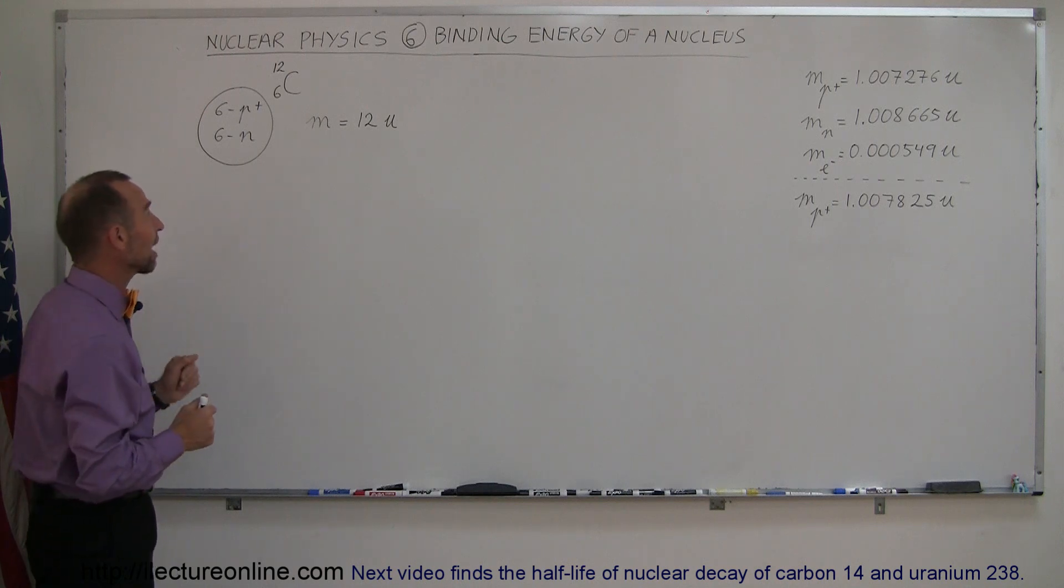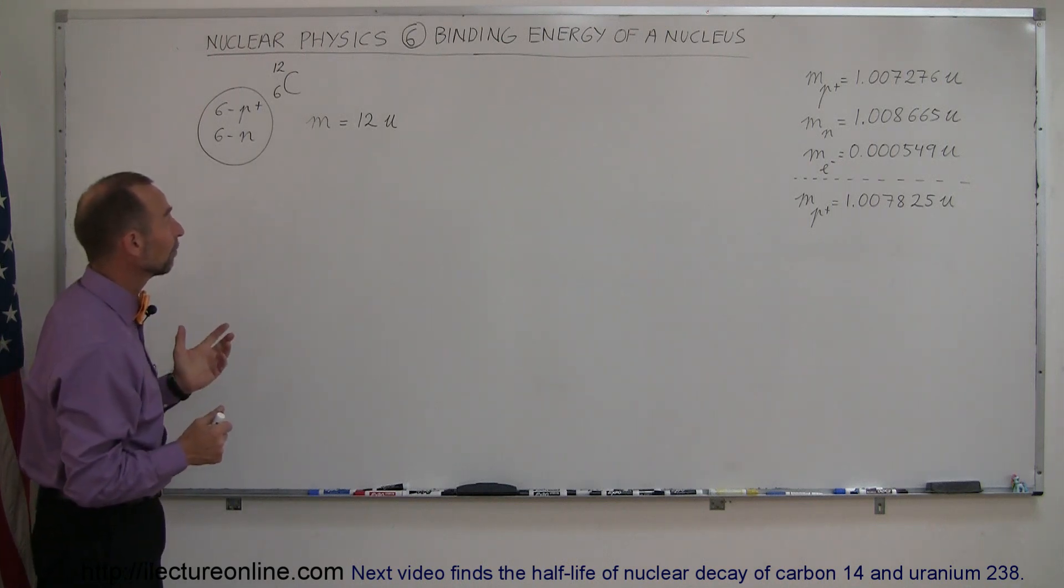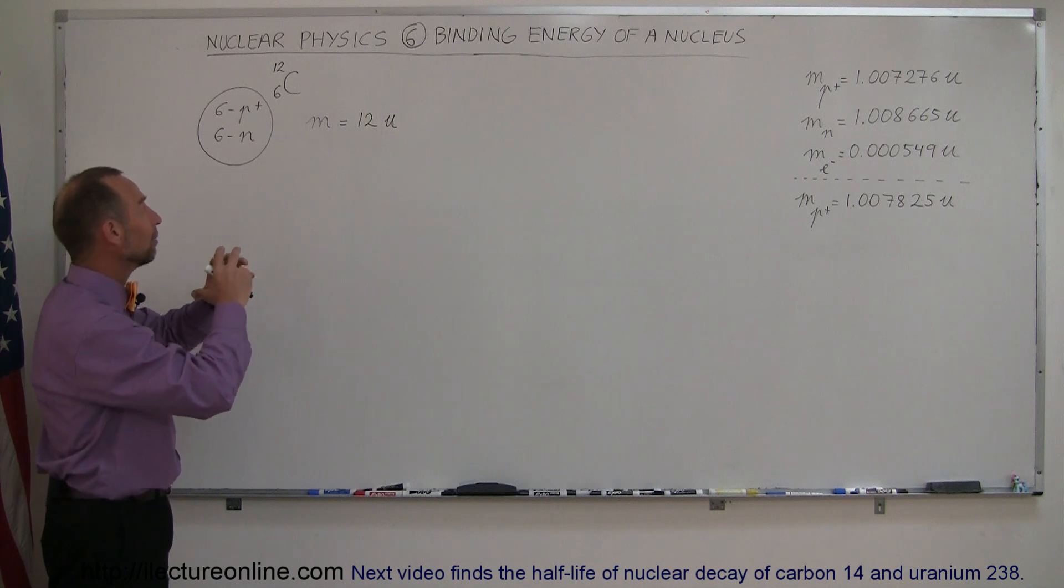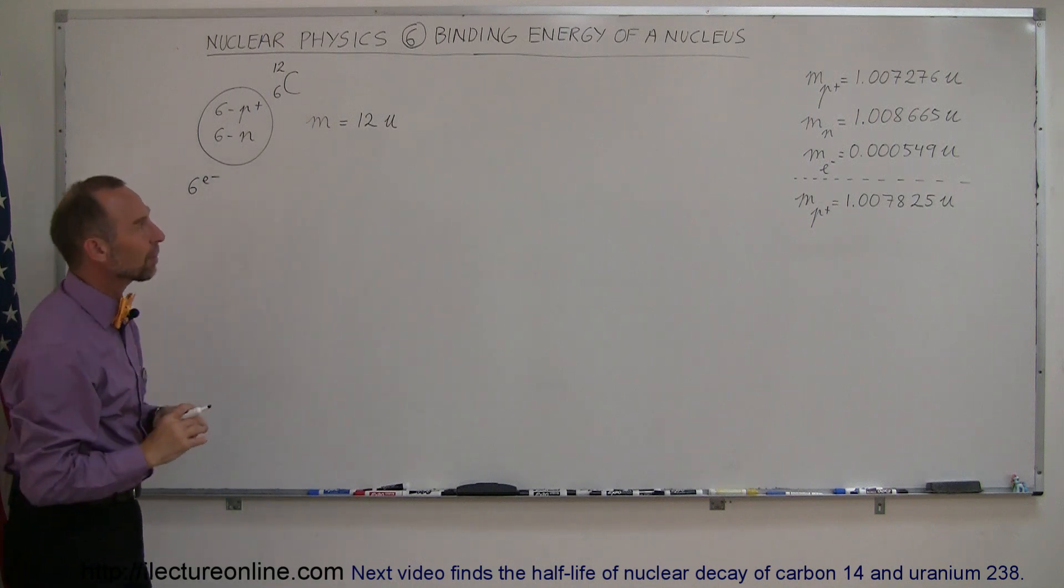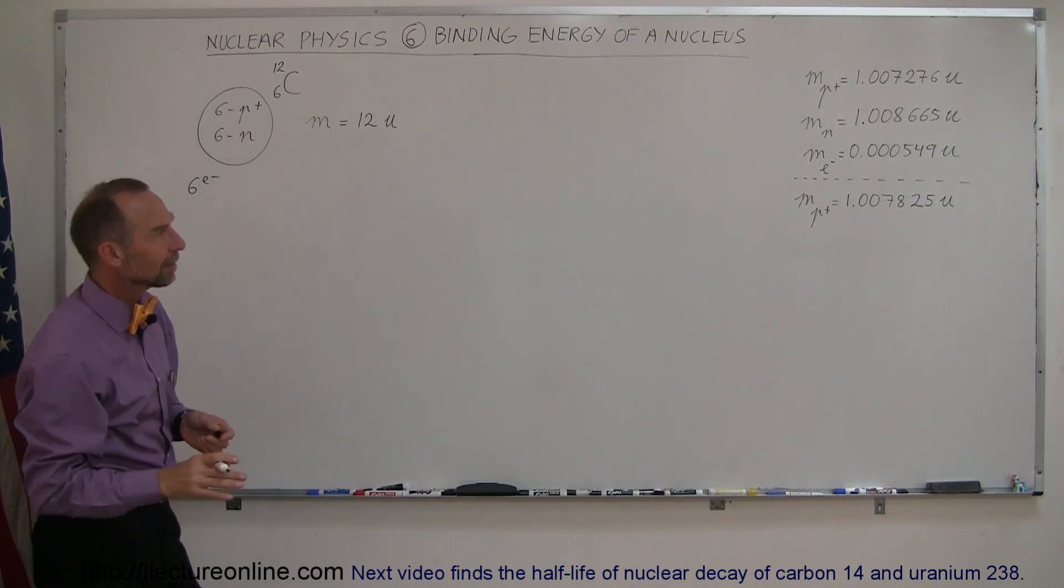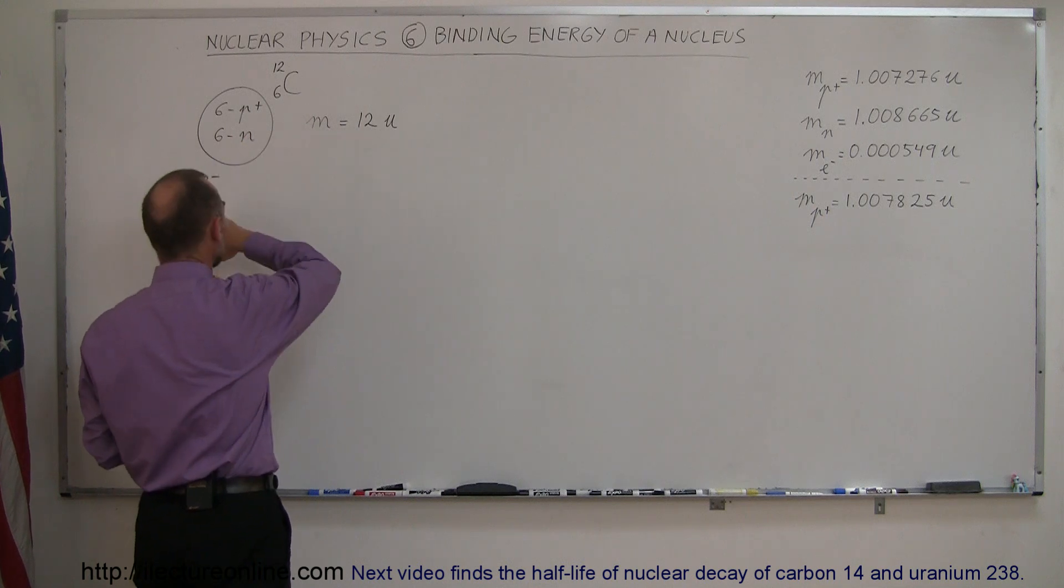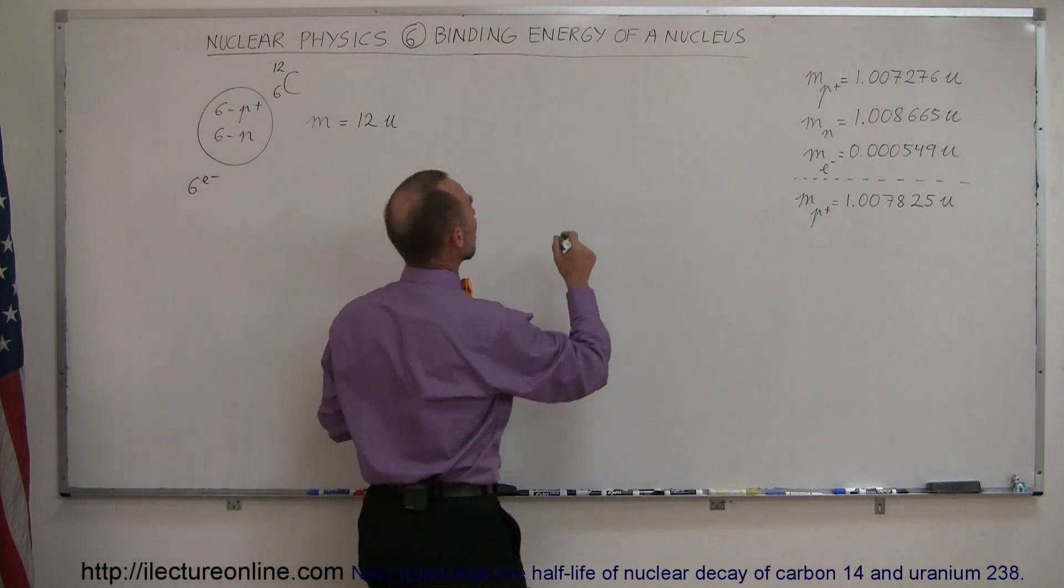Let's find out how much mass is lost in this case. Well, first of all we know that the mass of a carbon atom, including the six electrons, we can't forget about those, is exactly 12 atomic mass units. So let's now calculate the mass of six protons, six neutrons, and six electrons separately and see what they are.